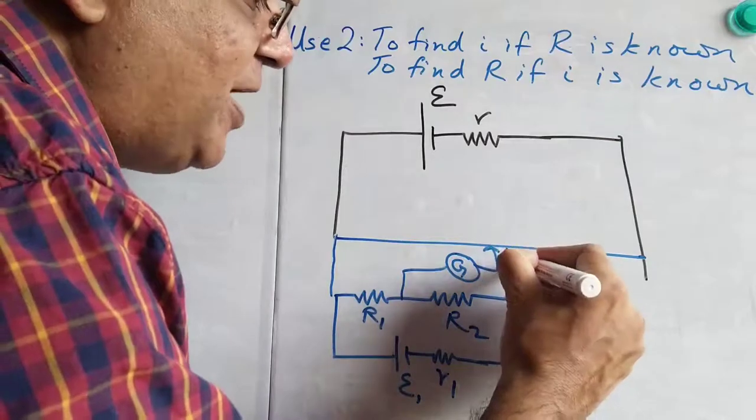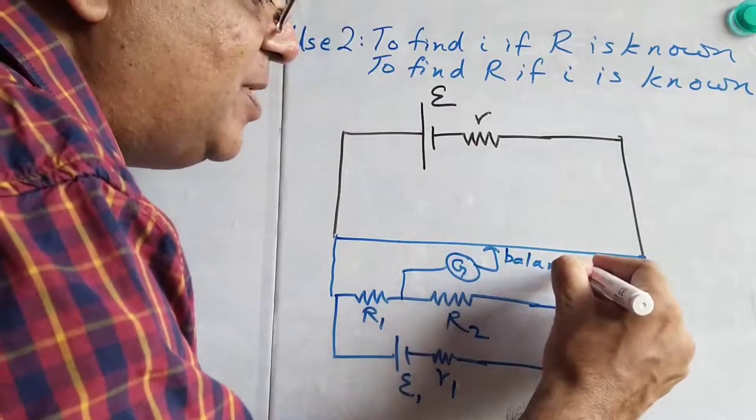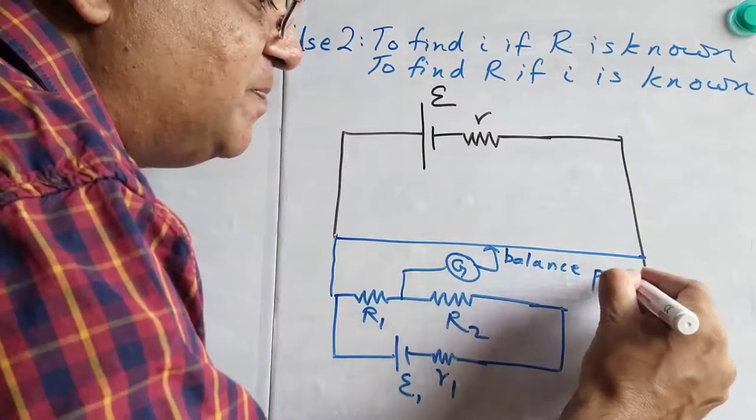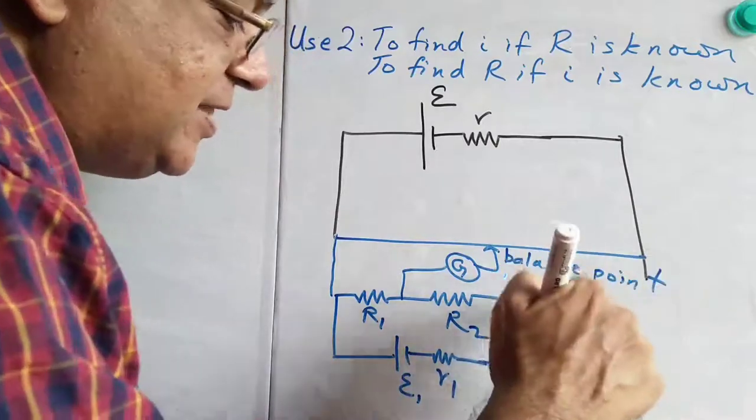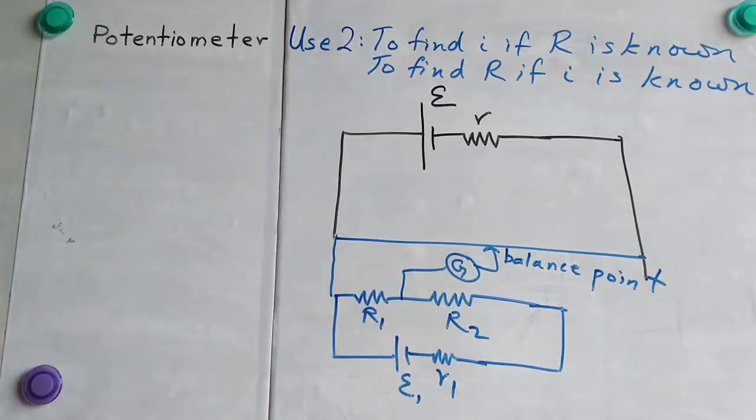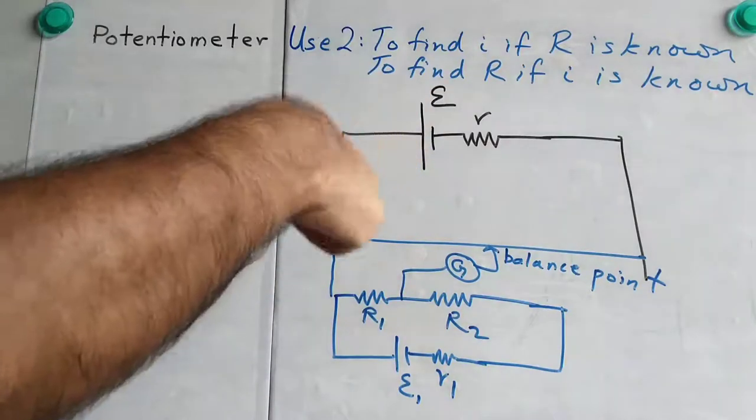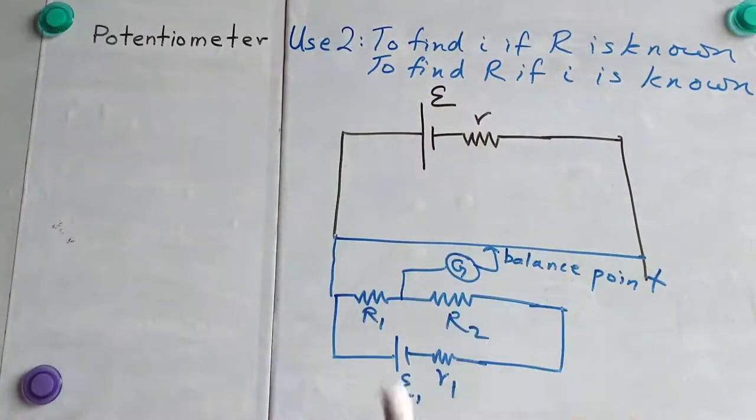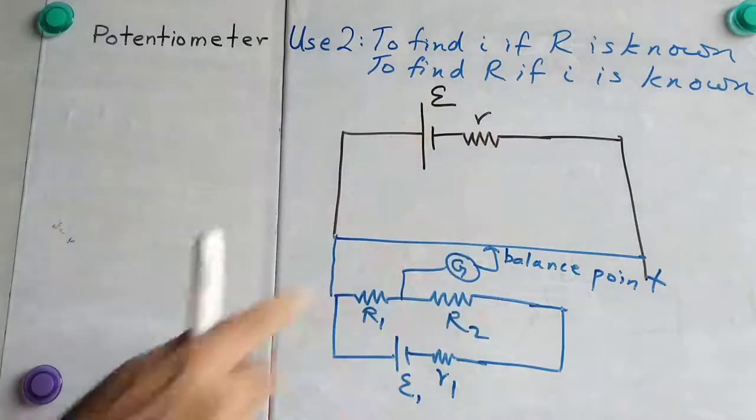At the balance point, current to the galvanometer is zero. So, current is circulating in the bottom circuit, independent of the current in the top circuit. So, some current is flowing to the potentiometer, that is constant, and here also some steady current is flowing.